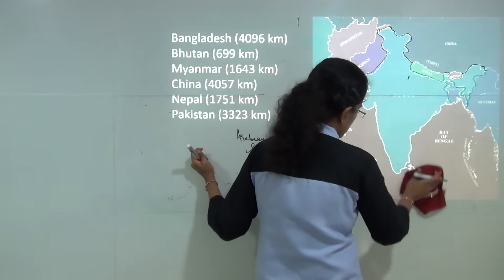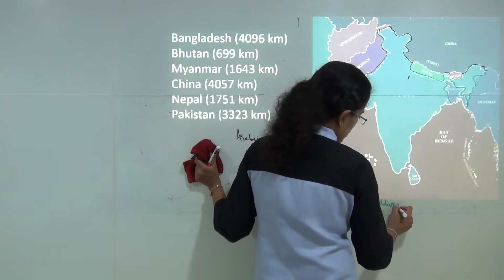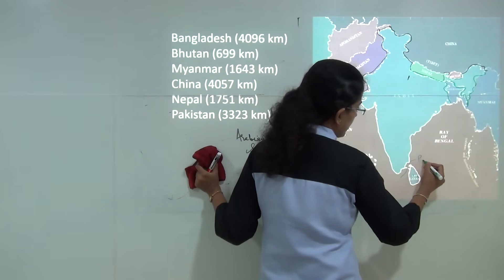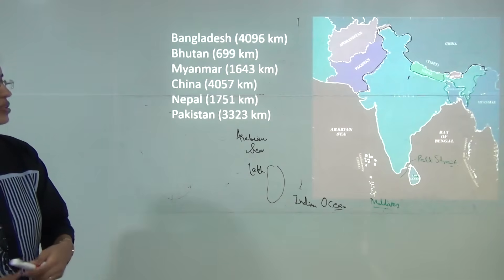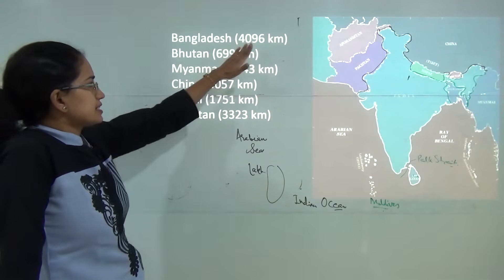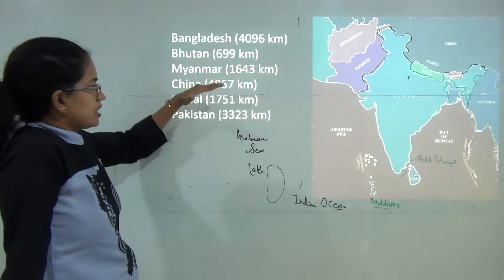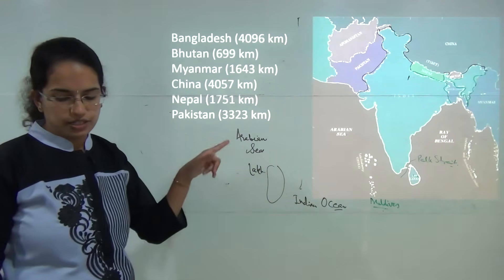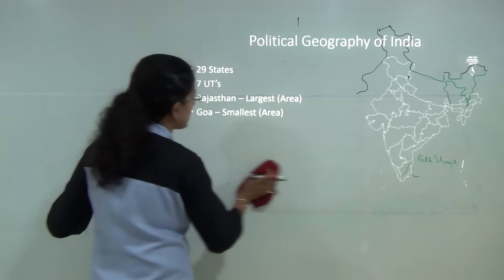There are also two major island neighbors: the Maldives, which lie in the Arabian Sea south of Lakshadweep, and Sri Lanka, which is separated from India by the Palk Strait. In terms of boundary length, India has the largest boundaries with Bangladesh and China, followed by Pakistan. With Bhutan, India has the smallest boundary in terms of kilometers.